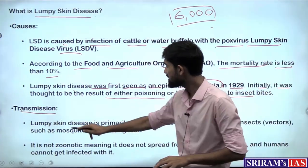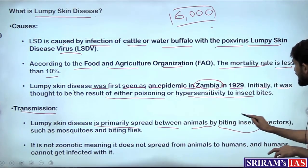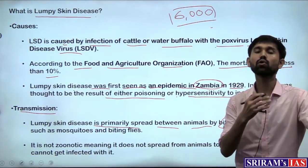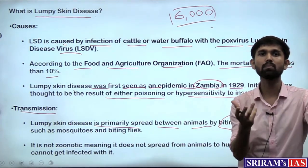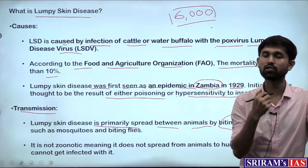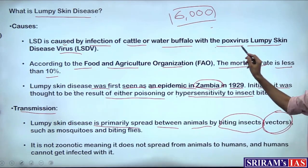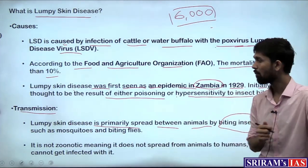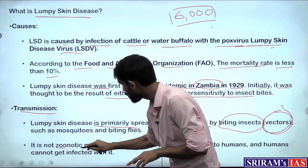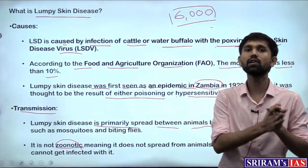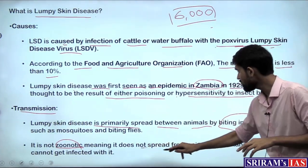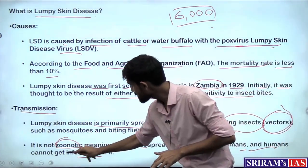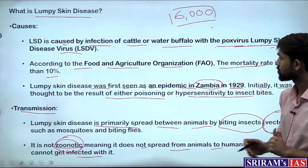Regarding transmission, lumpy skin disease is primarily spread between animals by biting insects, making it a vector-borne disease. Vectors are organisms that carry the pathogen — mosquitoes carry the pathogen for malaria and dengue, flies carry the pathogen for cholera. Similarly, such vectors carry the lumpy skin disease virus and bite cattle to transmit it. Importantly, it is not a zoonotic disease, which means it will not be transferred from cattle to humans. This is an important fact for the preliminary examination.